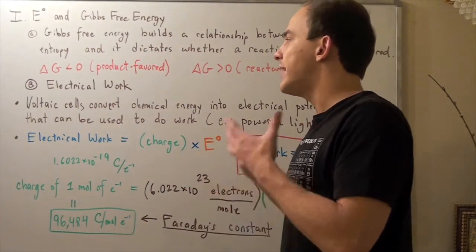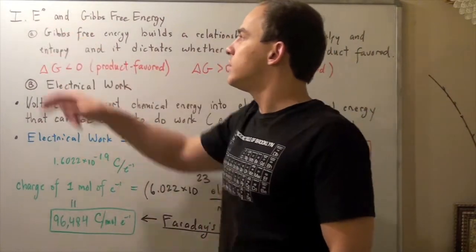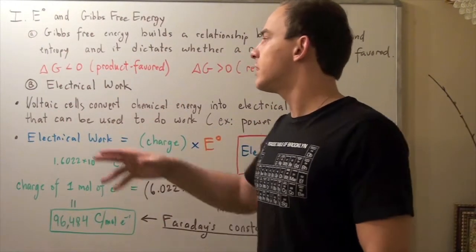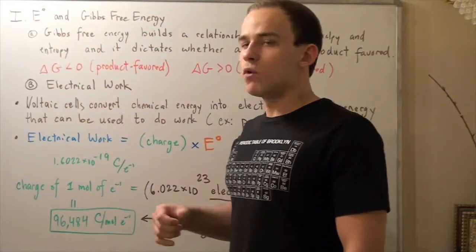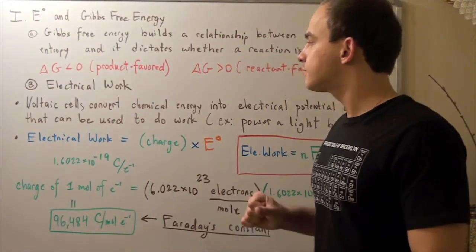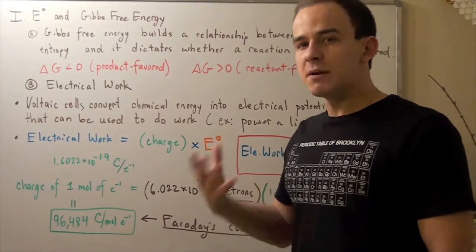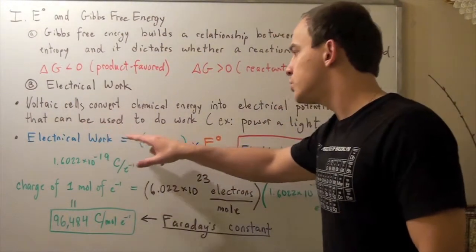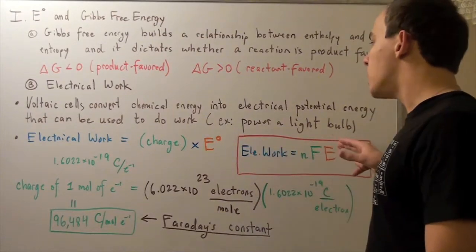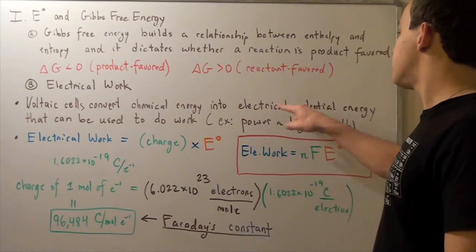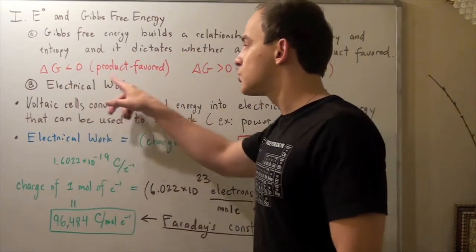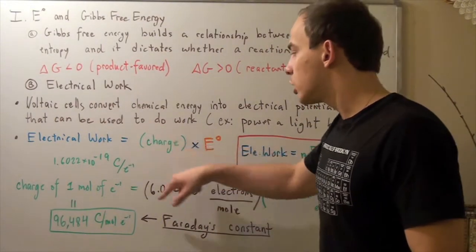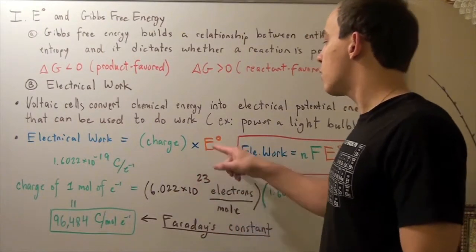Before we build a relationship between cell voltage and Gibbs free energy, let's examine something called electrical work. Voltaic cells or electrochemical cells convert chemical energy into electrical potential energy that can be used to do work — for example, power a light bulb or a motor. This electrical potential energy is also known as electrical work, and we can express it mathematically as the charge of a system times the cell voltage.